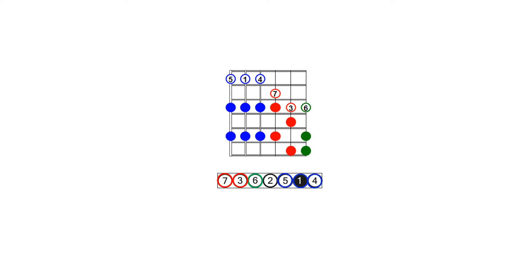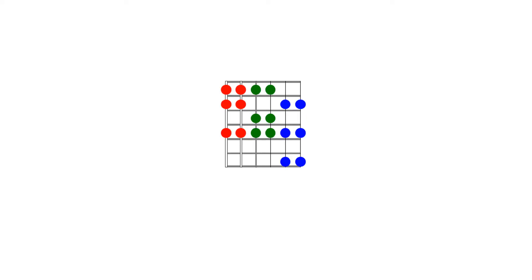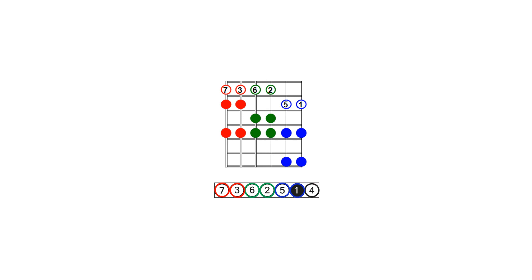Let's try another example. Take a look at this scale shape — can you guess the lowest intervals on all six strings? Observe the interval patterns on the E, A, D, G, and B, E string pairs. If you connect the dots correctly, you will find a minor second major second pattern on the E and A strings from intervals seven and three, a major second minor second pattern from intervals six and two, and stacked major seconds on the B and E strings from intervals five and one. We can conclude that this scale shape starts on the seventh scale degree, with seven, three, six, two, five, and one being the lowest intervals in this shape.